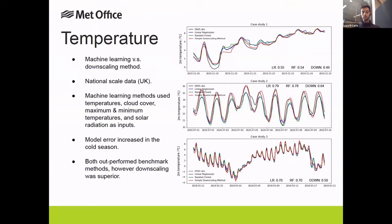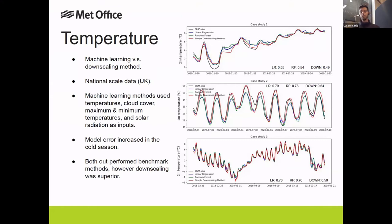Model error increased for the machine learning methods in the cold season. Looking at case study three — the Beast from the East — you can see there's a strong diurnal cycle, but then there's an increase in temperatures with no prominent diurnal cycle, and the machine learning models struggled to capture this. The downscaling method actually captured it decently well because in wintertime we tend to see less prominent diurnal cycles. Both machine learning and downscaling methods outperformed the benchmark, but downscaling was superior, as seen in the RMSD values across all three case studies.